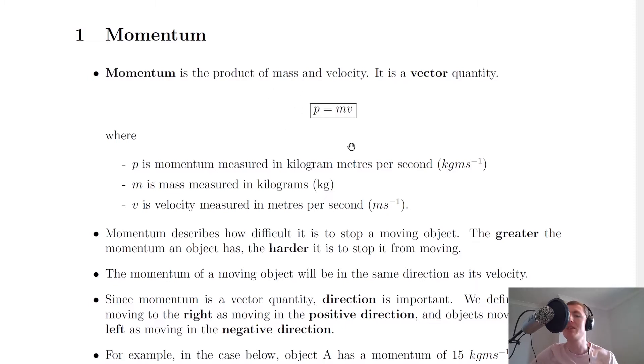So we give momentum the symbol small p, and we have here that p equals mv, where p is momentum measured in kilogram meters per second, m is mass measured in kilograms, and v is velocity measured in meters per second.